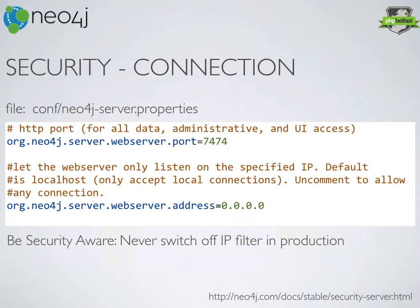There are a couple of features you might want to tweak in the configuration files — inside the Neo4j folder where you downloaded everything, go into the conf folder and look at the server properties file. The default web server is on port 7474; you can change it but it's easy enough to remember. The database itself only listens on localhost out of the box.